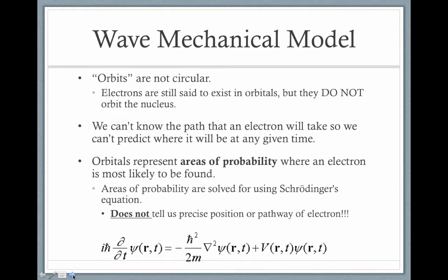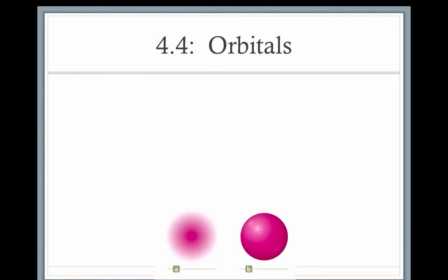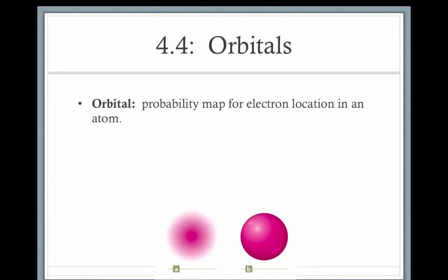This equation does not tell us the exact position of the electron or the pathway that the electron is taking, only the area in which it's most likely to be. So in the wave mechanical model, orbitals are essentially a probability map for an electron location.